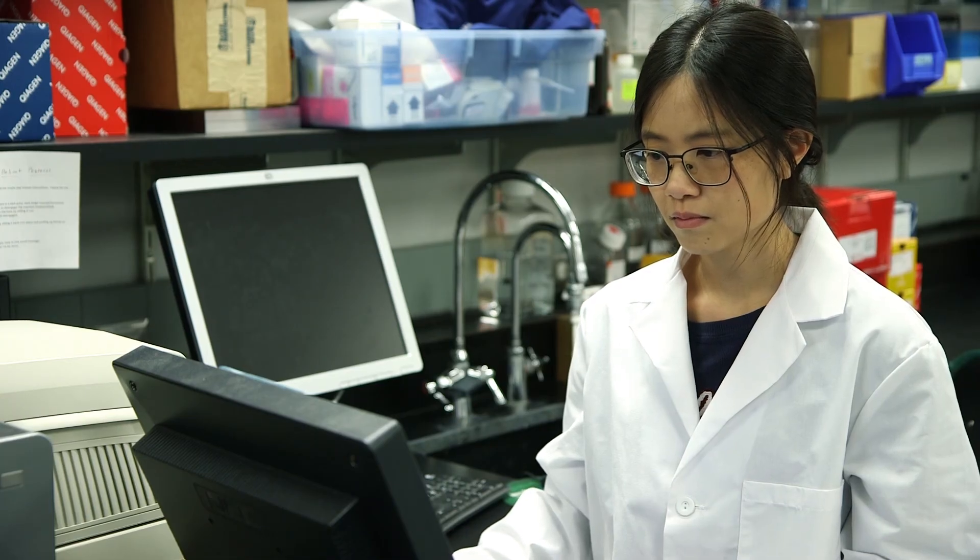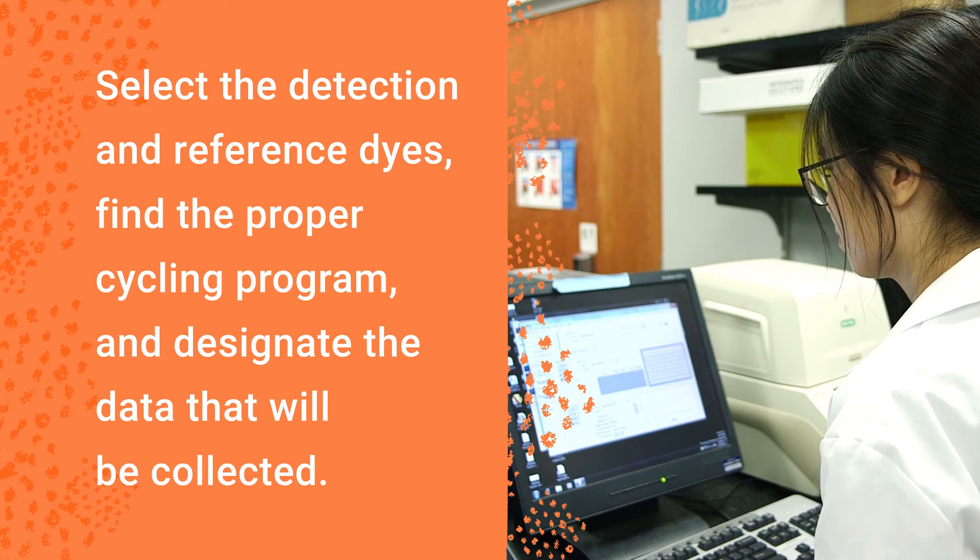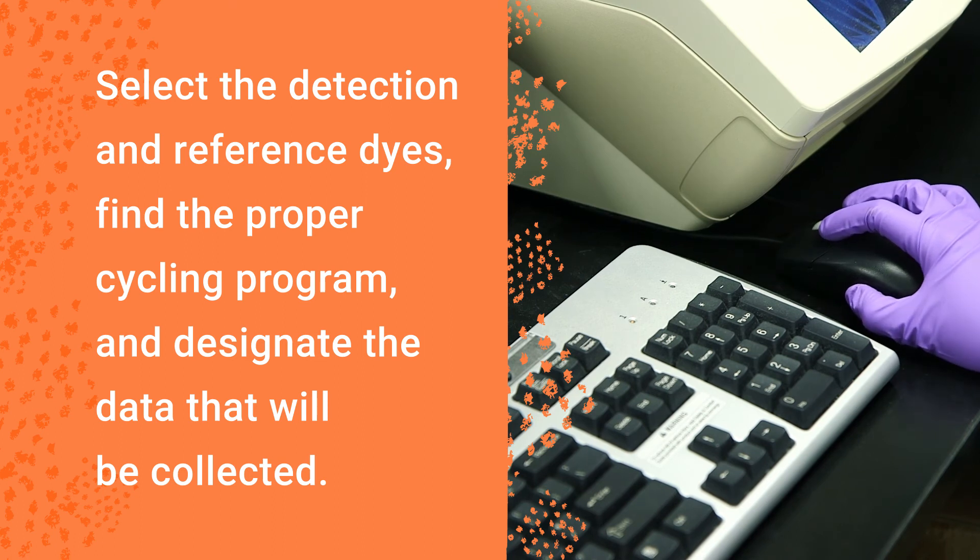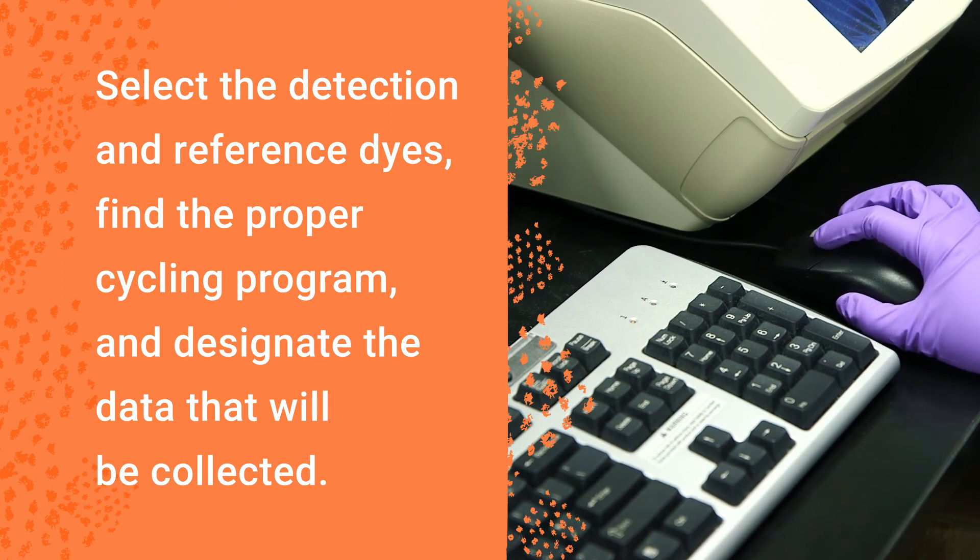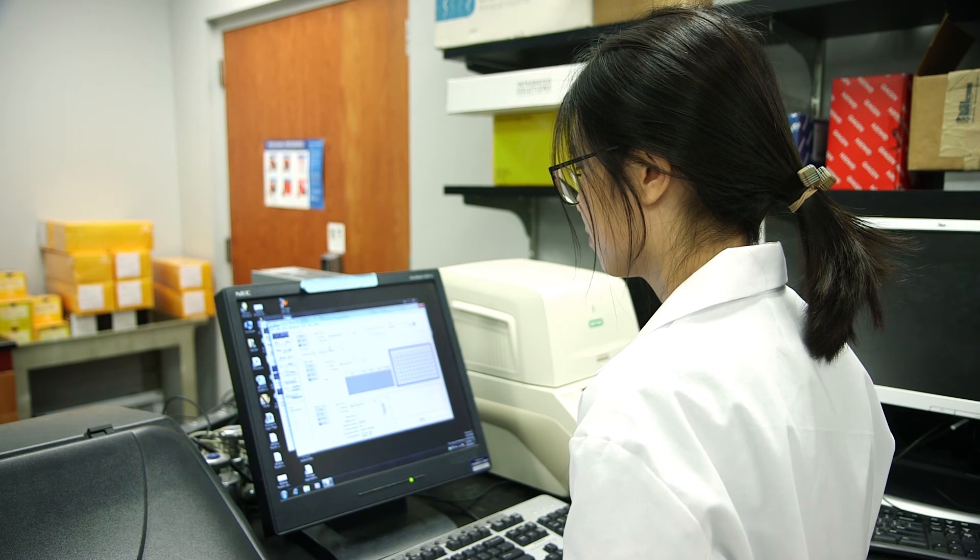You're almost ready! On your real-time PCR instrument, select the detection and reference dyes for the plate, find the proper cycling program, and designate the data that will be collected during the annealing step. If you're unsure of any of these settings, consider checking out the instrument manual.